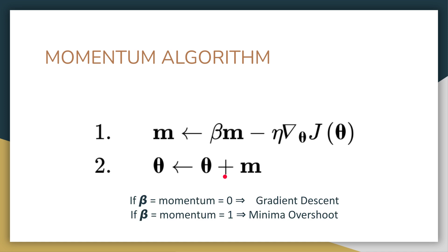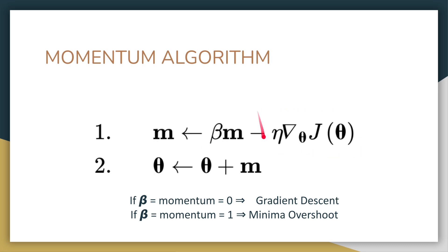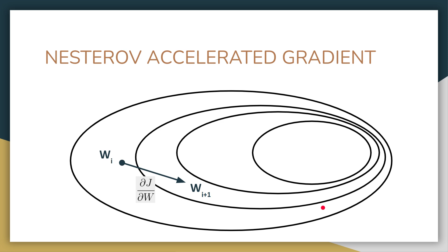One more point about the momentum parameter beta: if you set beta to zero, the previous momentum term becomes zero and the momentum vector equals just the current gradient — making the algorithm equivalent to simple gradient descent. If you set beta to one, the momentum vector keeps increasing with each iteration, causing overshooting and oscillation without converging to the global minima.